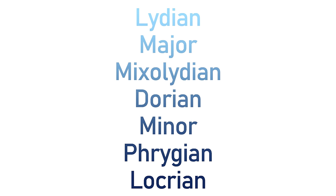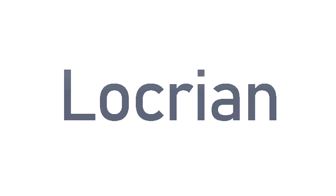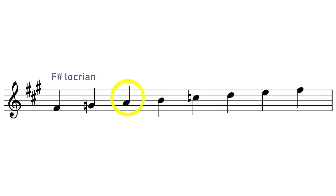So that leaves us with the odd one out, the final mode, the mode often described as the unusable mode. The Locrian mode has a minor third to it, so it's close to a minor scale, but it also has a diminished fifth, a lowered fifth.